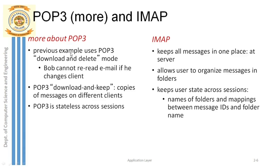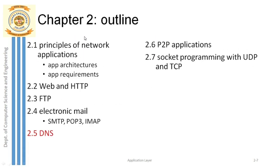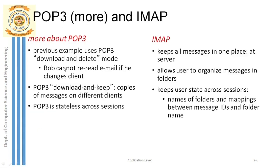All the emails in the POP3 server related to Bob — all those intended for Bob — will be deleted from the POP3 server. So what happens next? When Bob tries to log in through his phone, he will not be able to download those emails again. To illustrate: when I log into Gmail through my laptop, the remote Gmail server loads all the emails to my desktop.